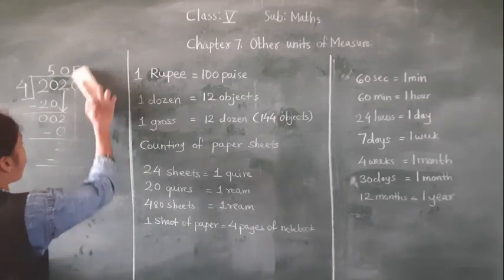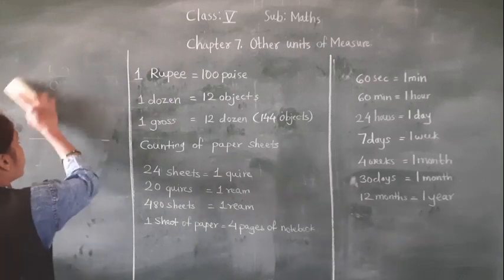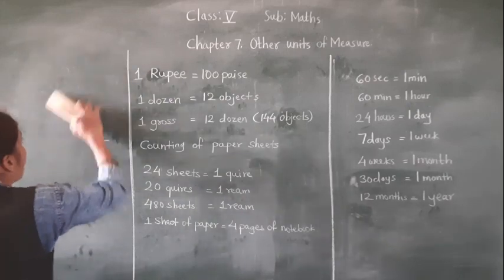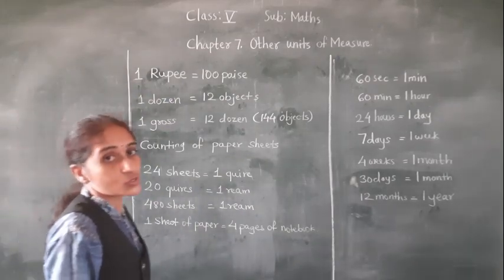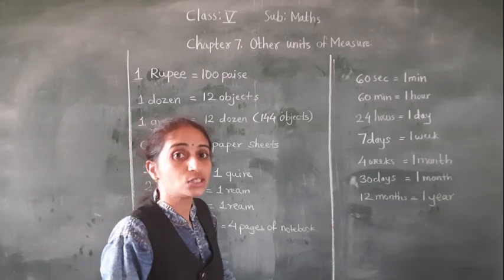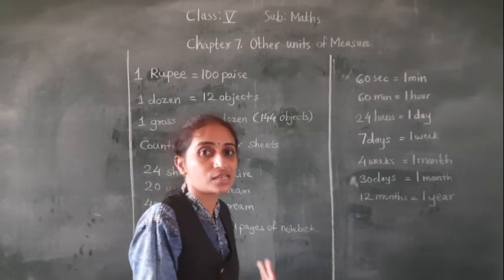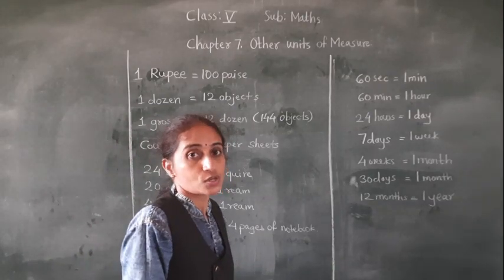After 4 years, the next leap year will come. 2020 is a leap year. So 2024 is also a leap year.